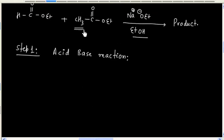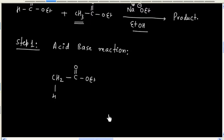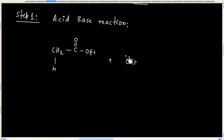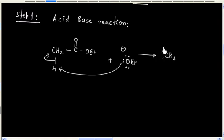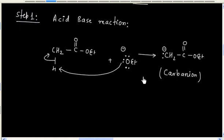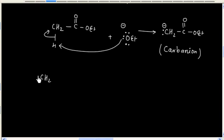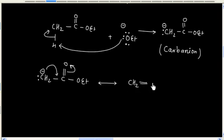So we have alpha hydrogen, and alpha hydrogen is acidic. So ethoxide ion will act as a base and it will pull a proton. An enolate ion will be generated — this is a carbanion, and this carbanion is resonance stabilized. So there are two resonating structures.